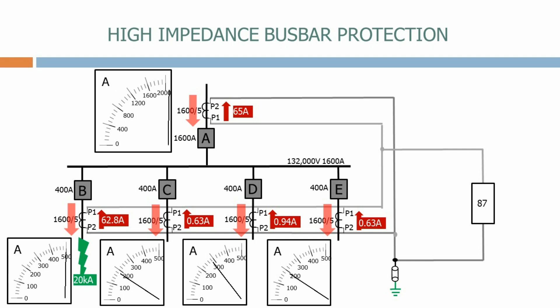Although the busbar protection will not operate, the feeder protection on feeder B will, clearing the fault from the system. The incomer current now carries on feeding the loads.